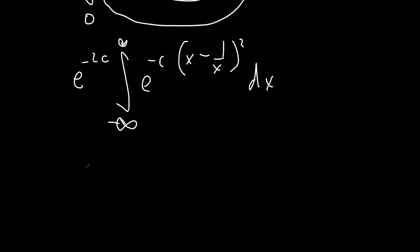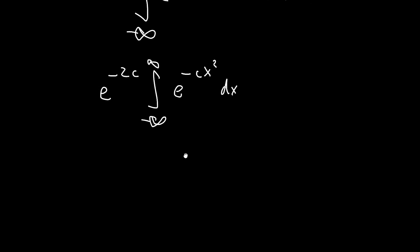So now we can apply Glasser's Master Theorem: e to the minus 2c times the integral between negative infinity and infinity of e to the minus c x squared dx. And this here is just the Gaussian integral. So our answer ends up being e to the minus 2c times square root pi over c.